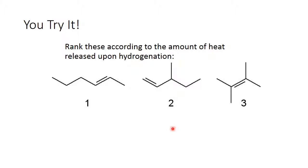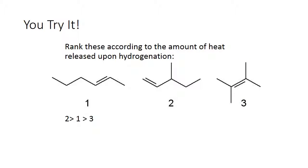Look at these three compounds — again the numbers 1, 2, 3 are just labels. Rank them according to the amount of heat released upon hydrogenation. They are all isomers of each other. The most stable compound has the lowest initial energy and will release the least energy. The least stable compound has the highest initial energy and will release the most. So the order from most to least heat released is 2, 1, 3.